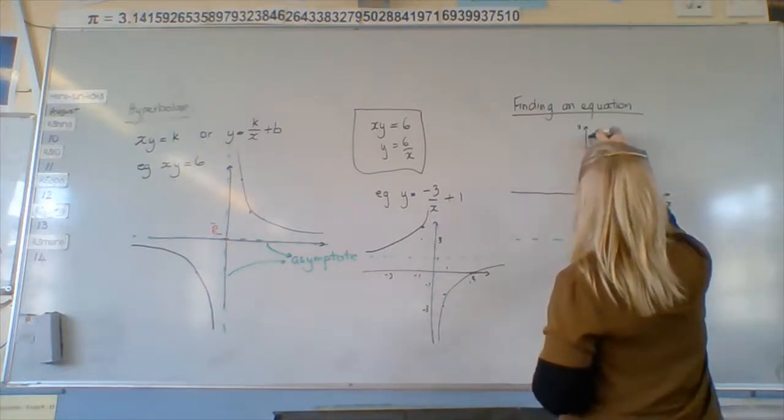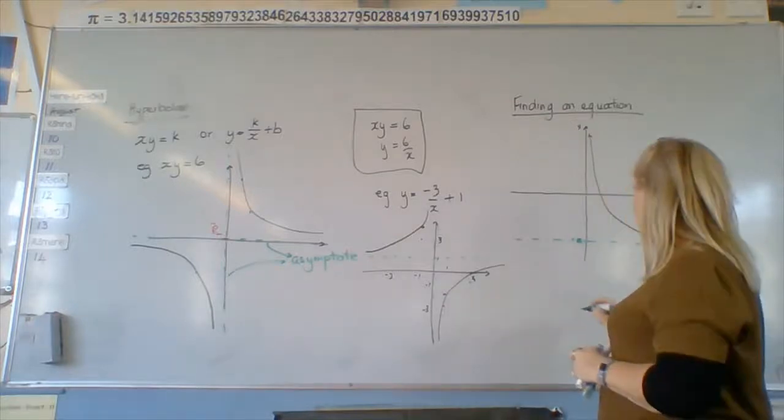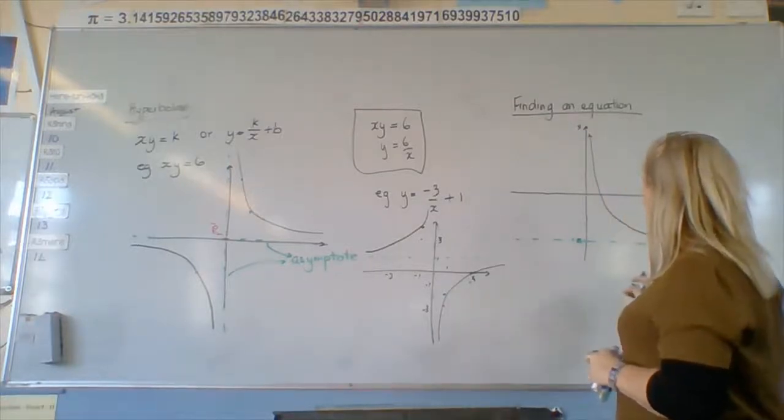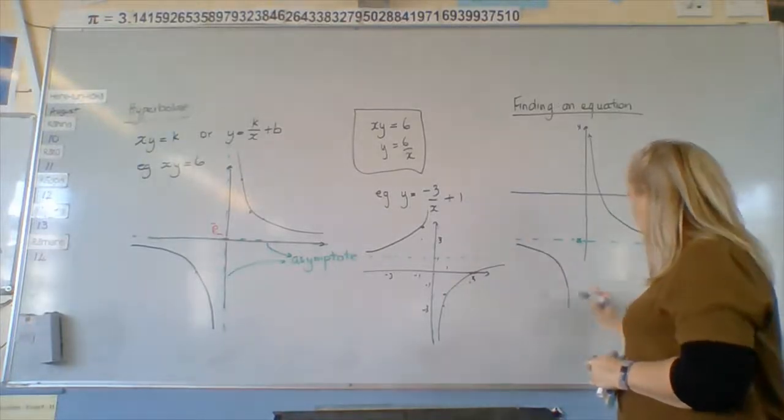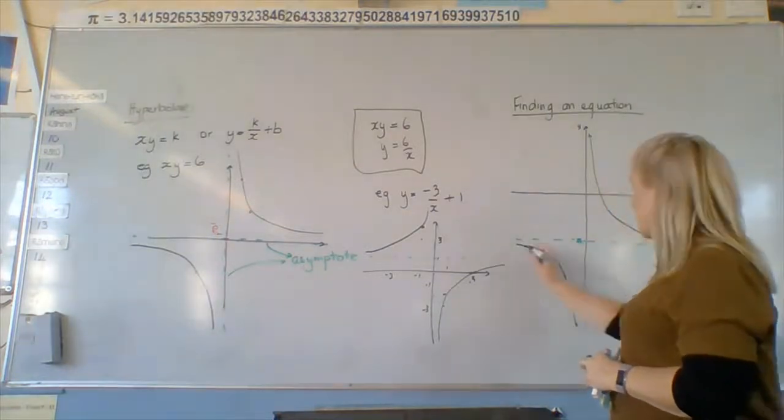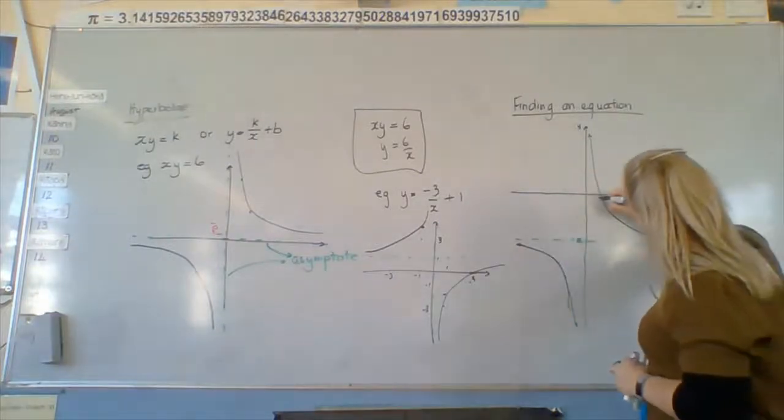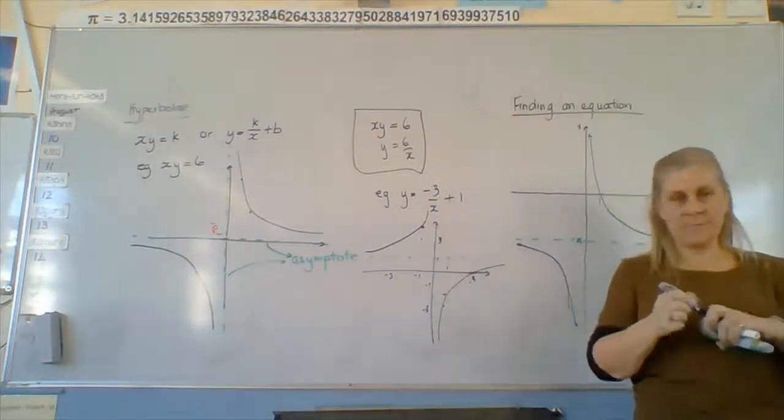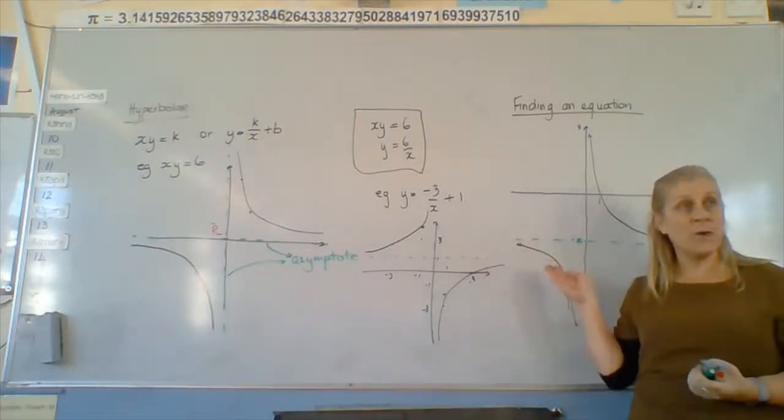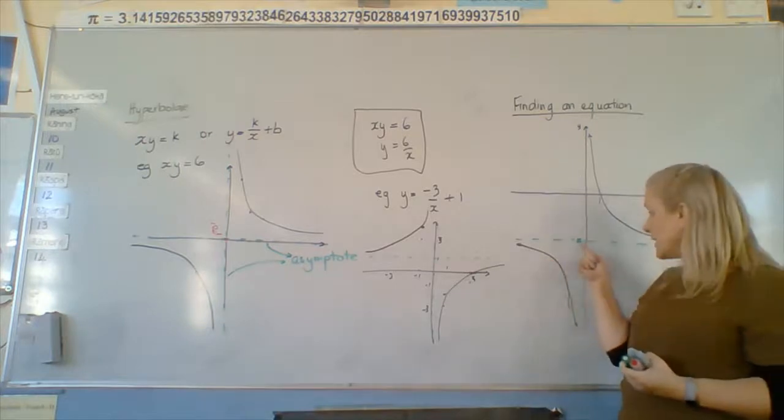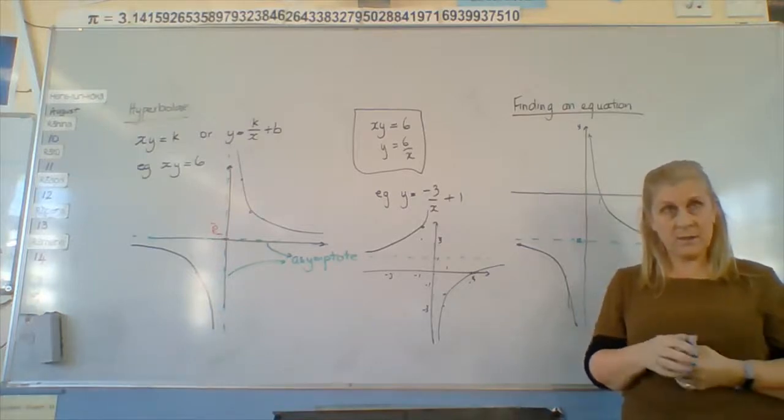Do they always give us the asymptote? No. Sometimes you have to just see it. Sometimes you have to just look for where it is. Going down towards, but not touching, that y axis. So in this graph, I've got the asymptote, which I can read off. So I know it's at negative four. And I've got one point. And that's all I need.